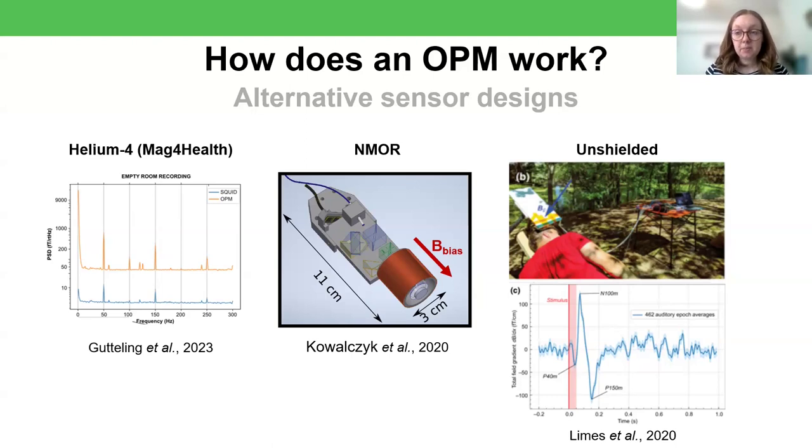Additionally, these helium OPMs work in much higher background magnetic fields. So the rubidium sensors I've been talking about tend to operate best in fields up to about eight nanotesla. These helium sensors can work in fields up to about 200 nanotesla. But if they're sounding too good to be true, it is worth noting that they do have a higher noise floor than the rubidium OPMs.